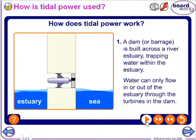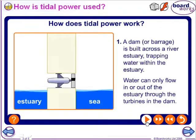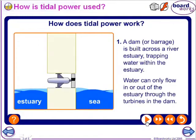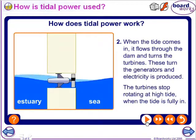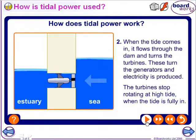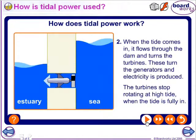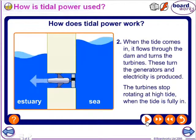First, tidal. A dam or barrage is built across a river estuary, trapping water within the estuary. Water can only flow in or out of the estuary through the turbines in the dam. When the tide comes in, it flows through the dam and turns the turbines. These turn the generators and electricity is produced.